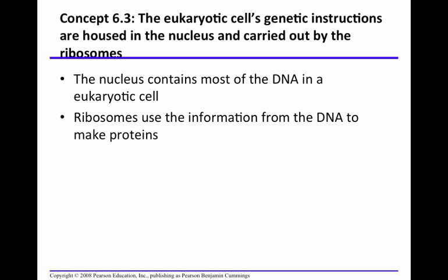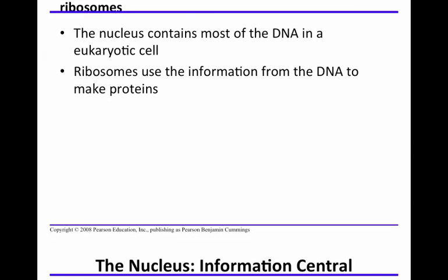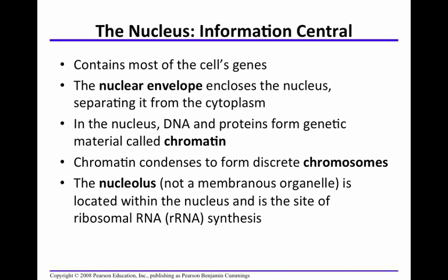The nucleus contains most of the DNA in a eukaryotic cell, and ribosomes use the information from the DNA to make proteins. What do we know about the nucleus? It is the information central. It contains most of the cell's genes. It has a nuclear envelope that encloses it, separating it from the cytoplasm. In the nucleus, there's DNA and there are proteins, and they form genetic material called chromatin.